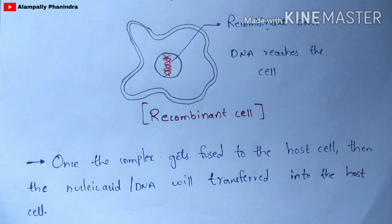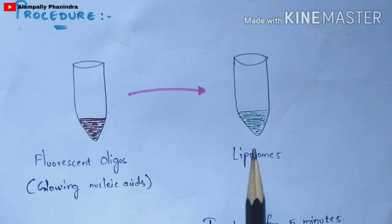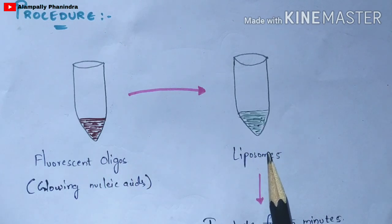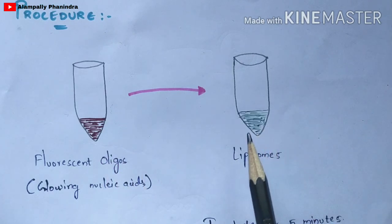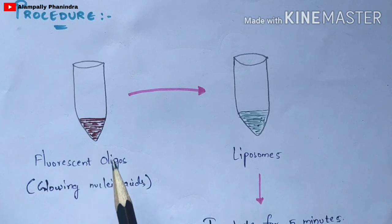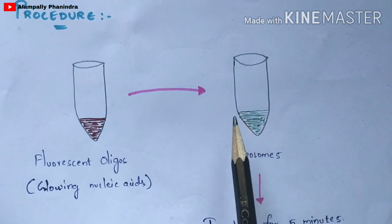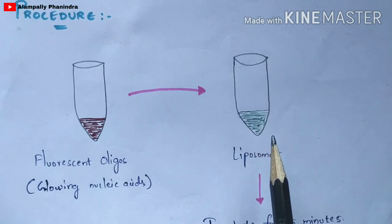In this way, the lipofection process transfers the gene from the liposome into the host cell, forming a recombinant cell containing recombinant DNA. For the practical protocol, you take two cuvettes: in one cuvette you place fluorescent oligos — glowing nucleic acids that exhibit fluorescence and produce color — and in the second cuvette you place the liposome solution. You then add the fluorescent oligos into the liposomes.